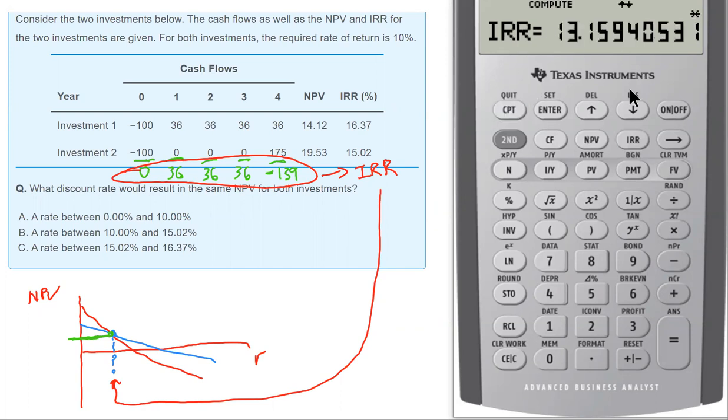Now just push IRR and compute. And there it is, it gives us the answer. The answer is 13.15. So now we know exactly where this correct answer is. So 13.15.